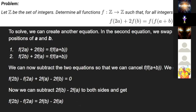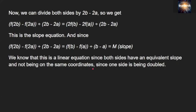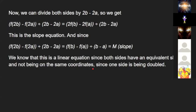Now we can divide both sides by 2b - 2a, so we get (f(2b) - f(2a))/(2b - 2a) = (2f(b) - 2f(a))/(2b - 2a). This is the slope equation.